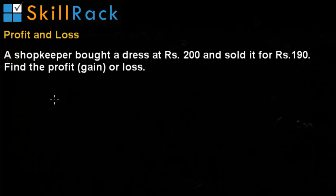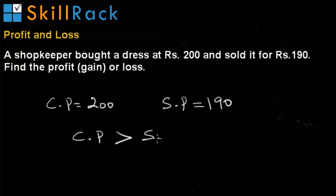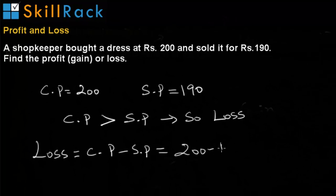Let us look at another example. The shopkeeper bought a dress at Rs. 200 and sold it for Rs. 190. Here, cost price is Rs. 200 and selling price is Rs. 190. So, selling price is less than the cost price. Hence, it is a loss. Loss is calculated by the formula cost price minus selling price, which is Rs. 200 minus Rs. 190. So, the loss is Rs. 10.